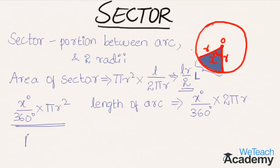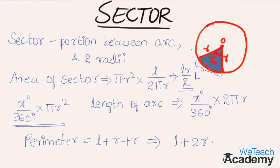The perimeter of sector is the sum of all its sides: L plus R plus R, which equals L plus 2R. So, the perimeter of sector is L plus 2R. To summarize: area of sector is LR by 2, or x degrees divided by 360 degrees into pi R squared; length of arc is x degrees by 360 into 2 pi R.